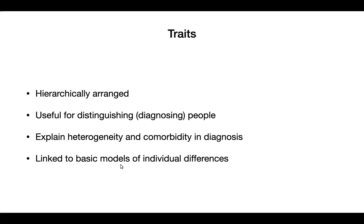One of the big advantages is that by using an evidence-based model, we're linking psychiatric diagnosis with how people study individual differences in personality in the lab. People from personality psychology use models very similar to this. Therefore, all of the evidence we have about stability and course, genetics and heritability, person-environment interaction and correlation, and the correlates and predictive validity of personality can be migrated into the diagnostic model in a way that provides a very firm foundation for diagnosis.